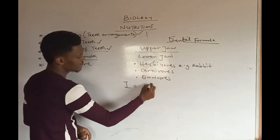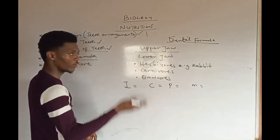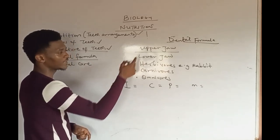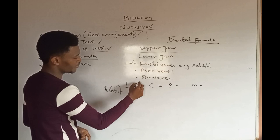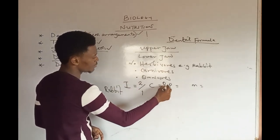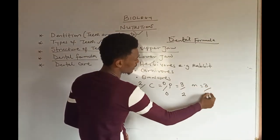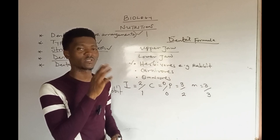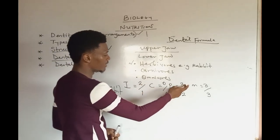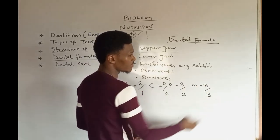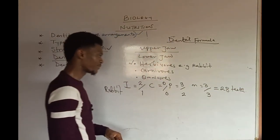We use the code ICPM — meaning incisors, canines, premolars, and molars of the upper and lower jaw of one half. For rabbit: incisors are 2 over 1, canines are 0 over 0, premolars are 3 over 2, and molars are 3 over 3. When you sum up everything — 2+1=3, 3+3=6, giving 8, and 8+6=14 — then 14 times 2 gives the total number of teeth.